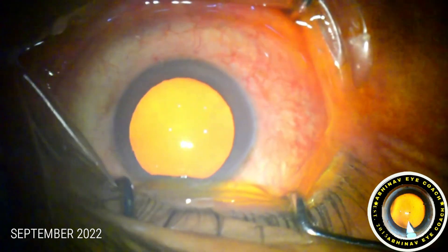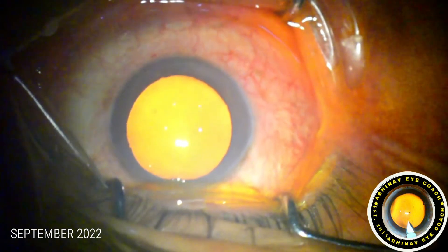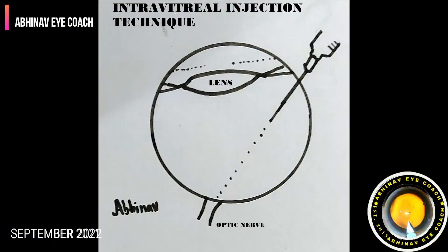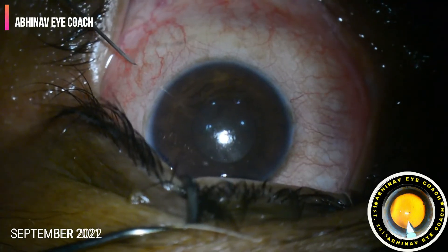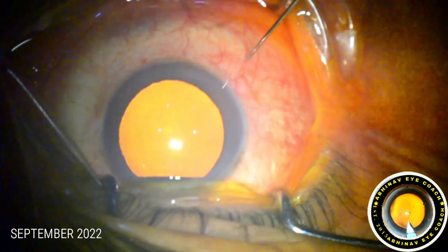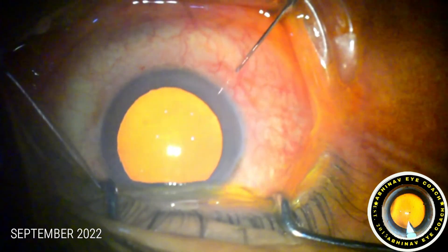The direction of the needle while giving the injection should be pointed towards the optic disc, and care must be taken not to touch or perforate the posterior capsule of the crystalline lens. The injection is directed towards the disc.